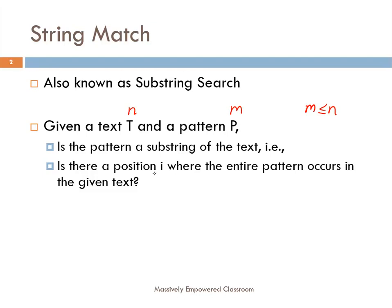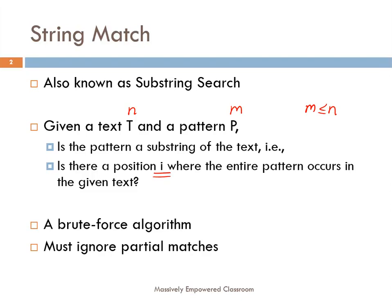The problem is to find whether the pattern is a substring of the text — that is, is there a position I in the given text T starting from which the entire pattern P occurs in the text? One important point before we look at the example: a partial match is not good enough. If the pattern had four characters and only the first two are present, that is not a successful search. The entire pattern must be present in the given string.